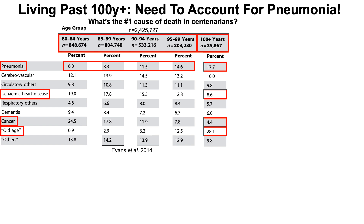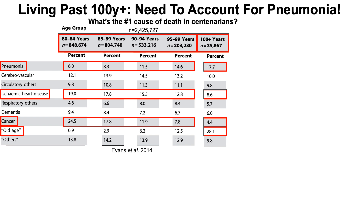So 6% to 8.3%, 11.5% to 14.6%, and then finally the centenarians at about 18% of all deaths related to pneumonia. Interestingly, also during that time from 80 to 100 plus, there's a reduction in both deaths from heart disease and cancer.